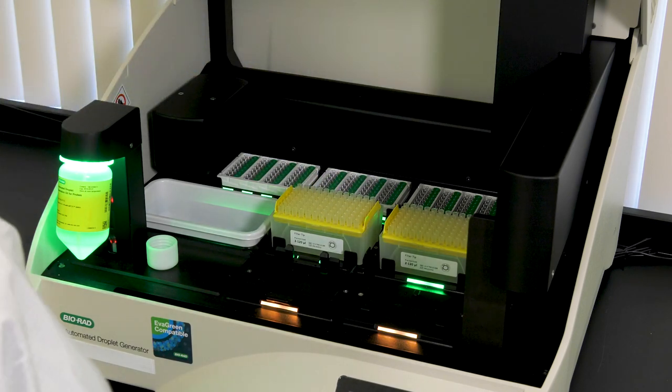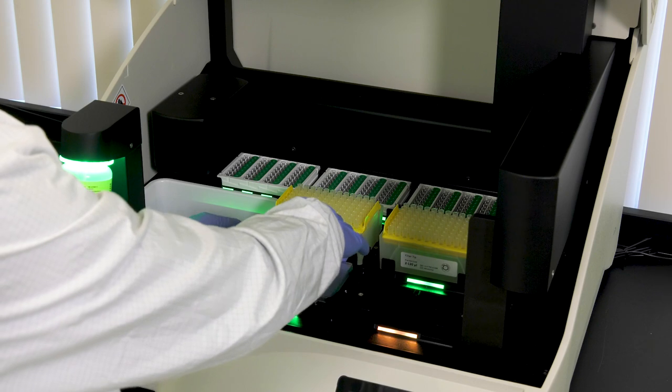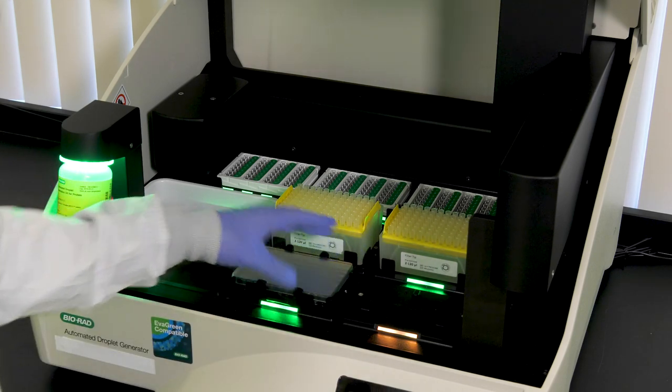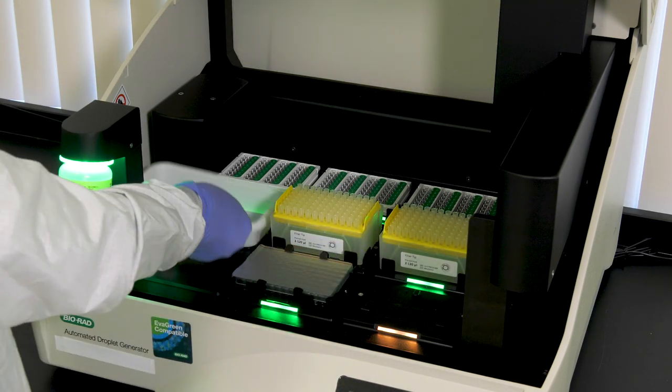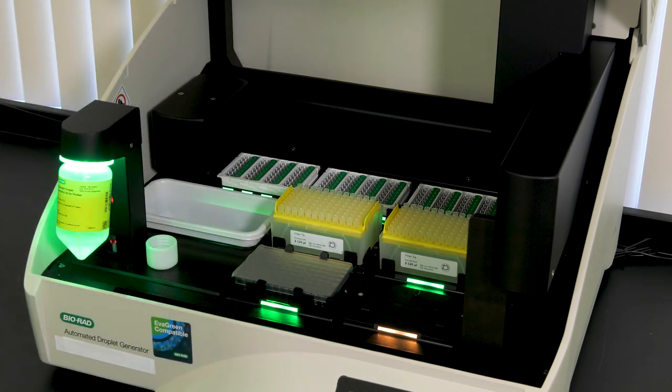Next, place your foil-sealed sample plate with 22 microliters per well at the front of the instrument, locking it in place with the locking tabs. Ensure that the plastic tip waste bin reservoir is empty.